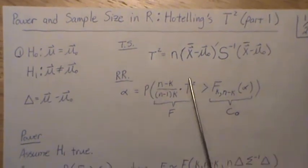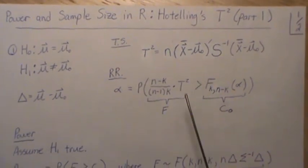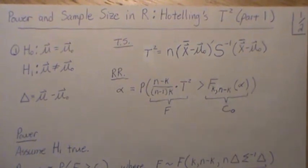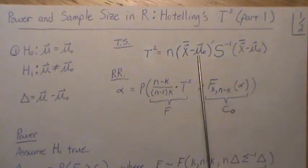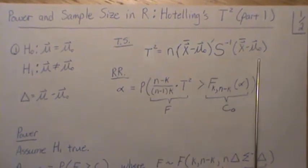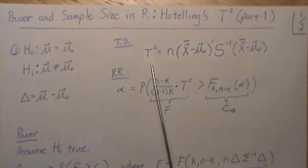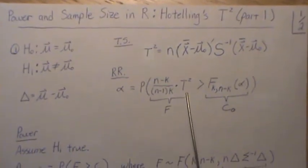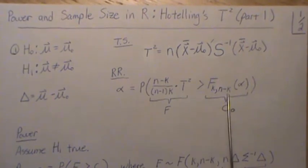Now, the test statistic follows very closely to the one-dimensional case, the student's T-squared test. But these are all vectors. So that's a vector, this is a vector, this is a matrix. It's called Hotelling's T-squared. And he showed that a multiple times this T-squared follows an F-distribution.